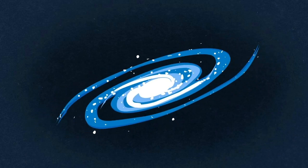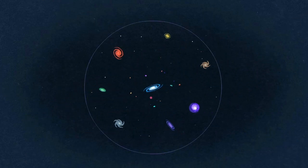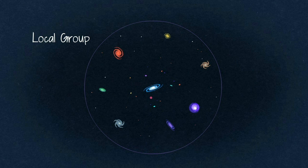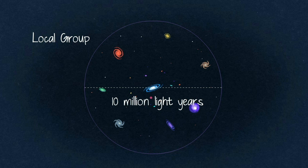Our Milky Way is part of a family called Local Group, which encompasses about 50 galaxies. Its diameter is, wait for it, 10 million light-years.